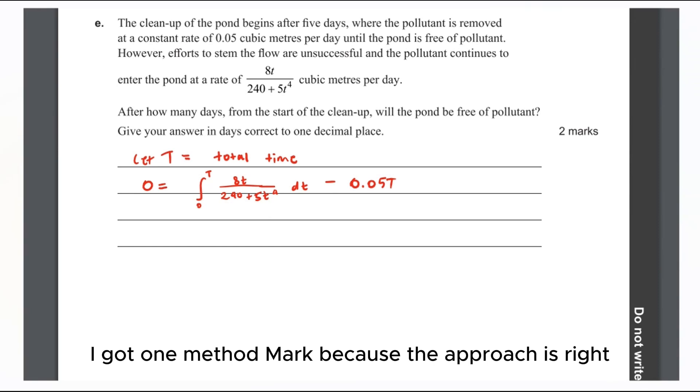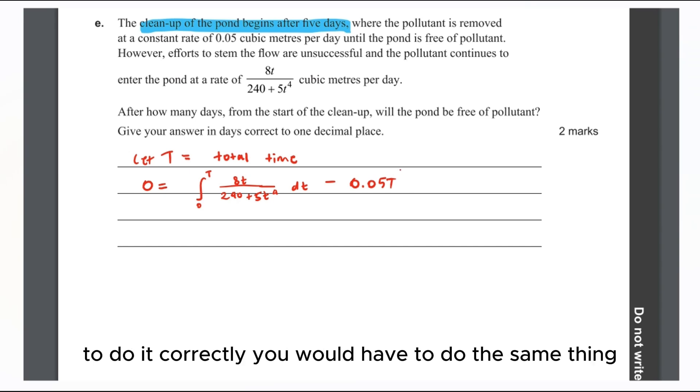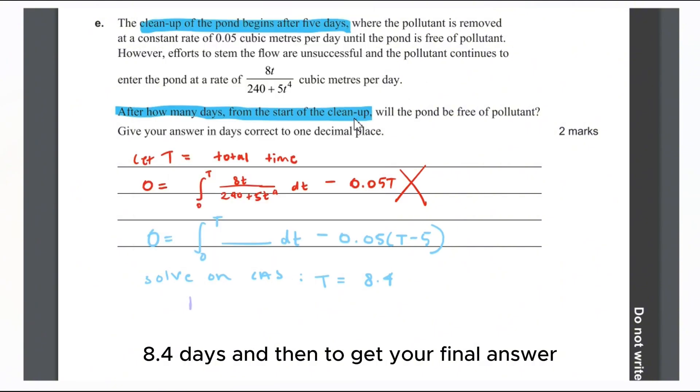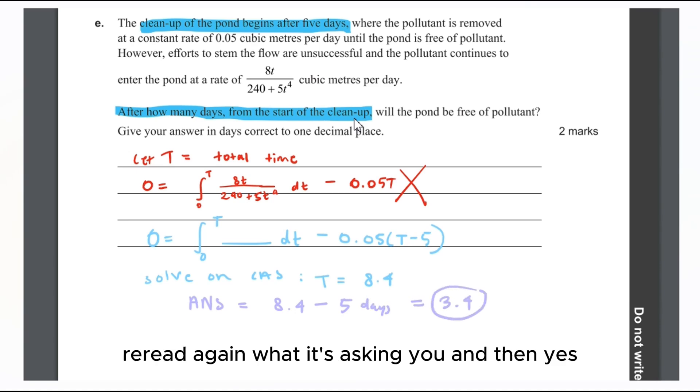The famous still water question. I got one method mark because I didn't take into account that cleanup began after five days, so I did not include that in the working. To do it correctly, you have to do the same thing, but by the end of that cleanup it's zero left. You have to take into account it's total time minus five. If you solve that on CAS, you will get the right answer that the total time by the end of cleanup is 8.4 days.